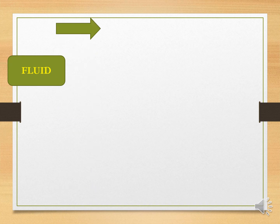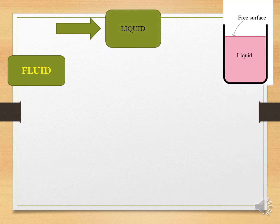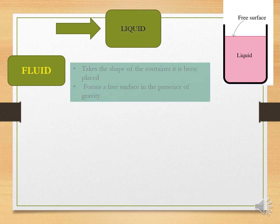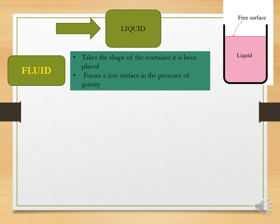Let's begin with liquid first. Imagine that you are pouring tea or coffee into a cup. The liquid will go down and form a free surface on the top layer. The liquid will take the shape of the container it is placed in, and it will form a free surface in the presence of gravity — you can see the free surface at the top.